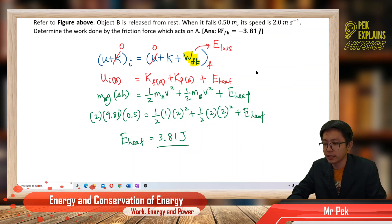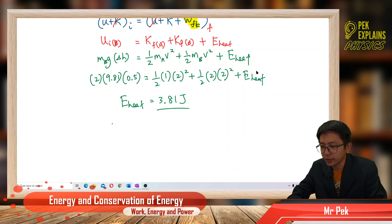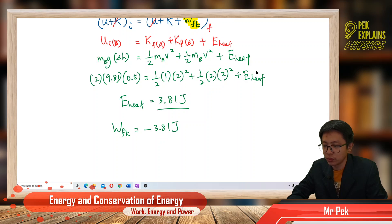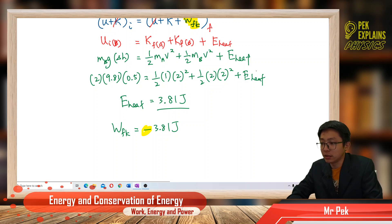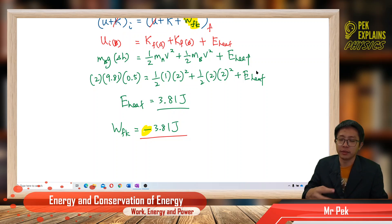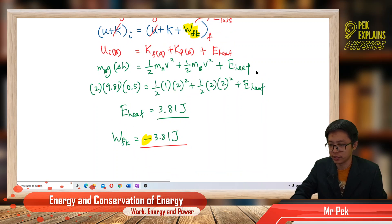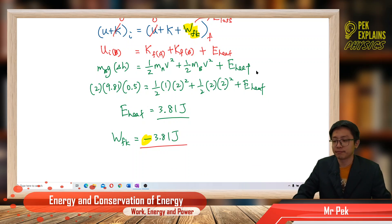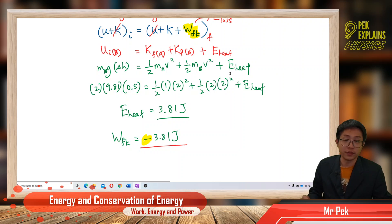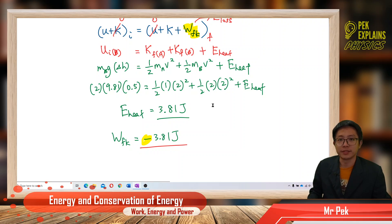So the work done against friction is equal to negative 3.81 joules. We put a negative sign because it is an energy loss. That's it for this question. I hope you enjoy the videos. Stay tuned for the upcoming videos. Bye bye.